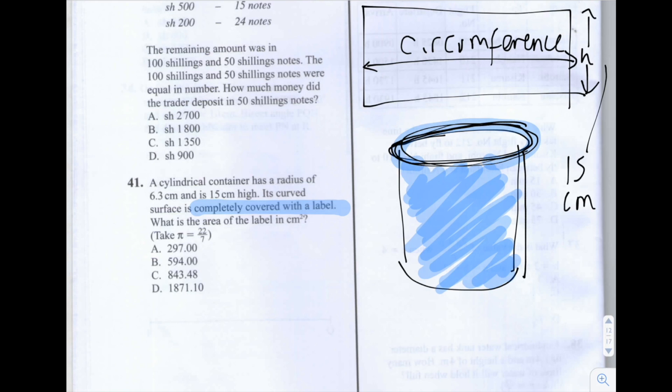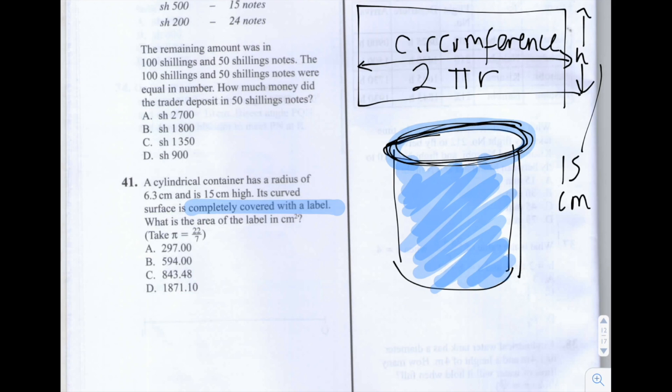And to work out the circumference, we just use the normal formula we have for the circumference of a circle. And that is 2πr. So I'm going to write that down here again. And I'm going to put a big C for circumference is equal to 2πr.